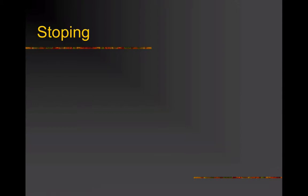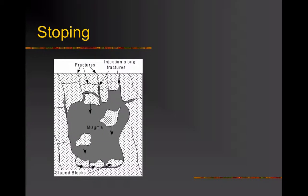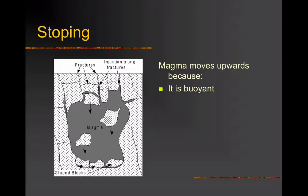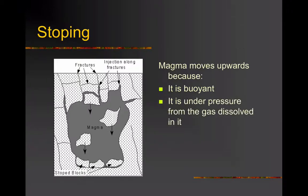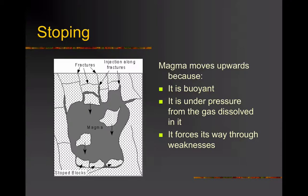This process of magma rising to the surface we call stoping. Here we can see the magma rising because it's buoyant — it's less dense than the surrounding rock and it's under pressure from the gas that's dissolved in it. As a result, it will force its way up, pushing into weaknesses in the country rock, which is just the surrounding rock into which this magma is being intruded, and breaking away fragments of that country rock.